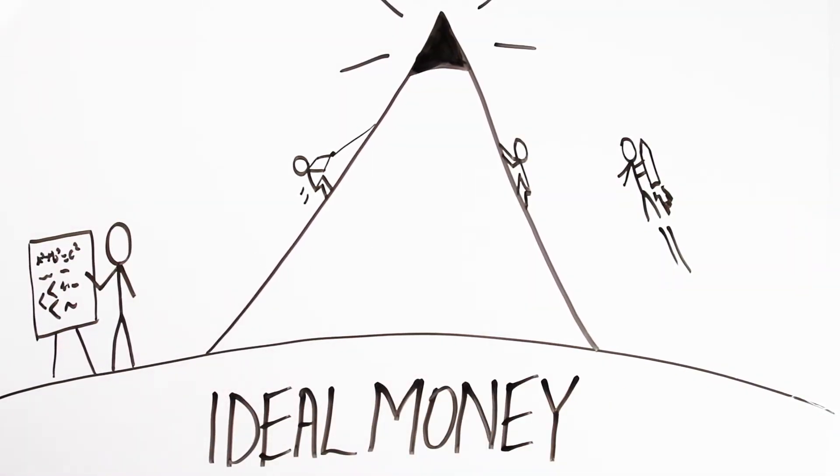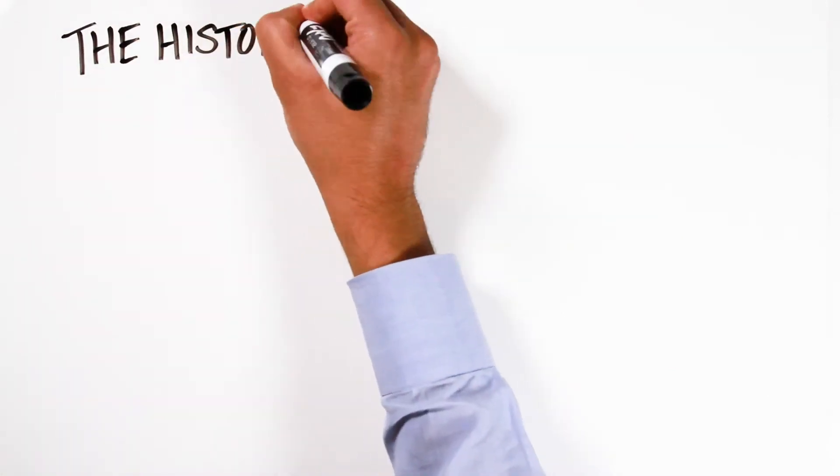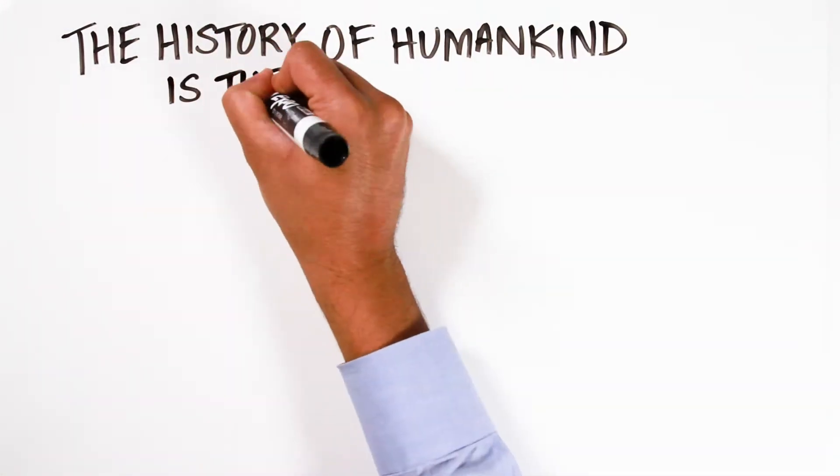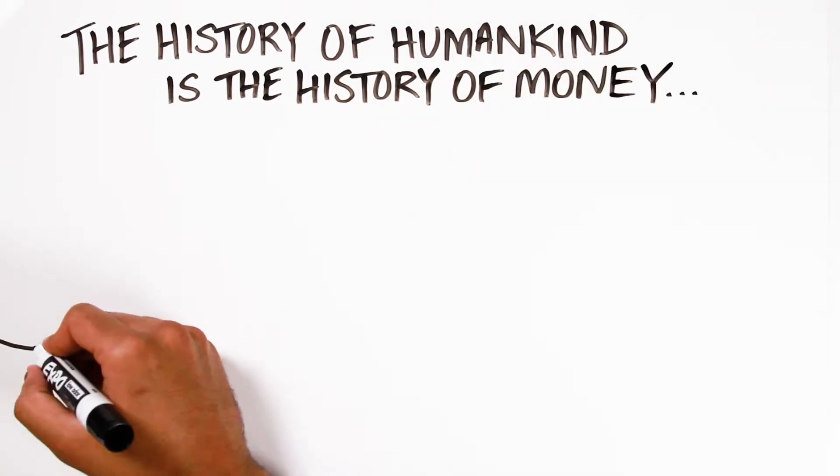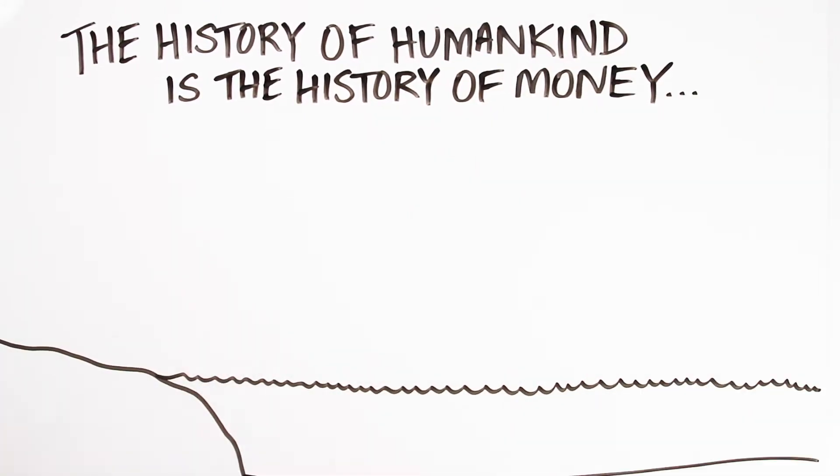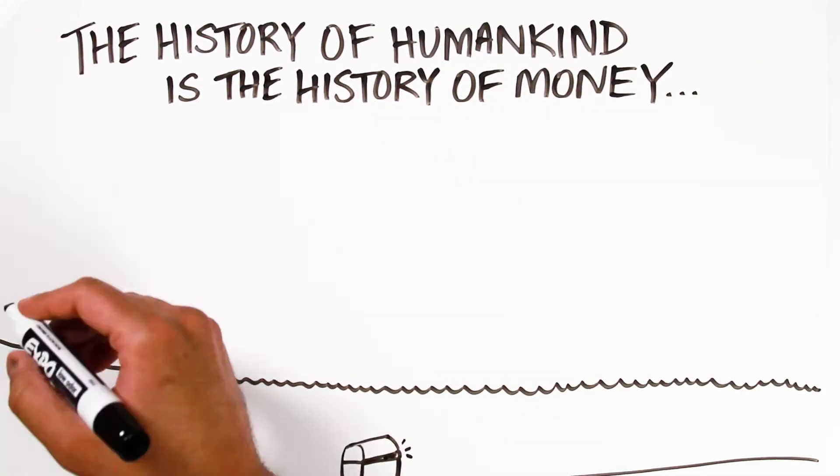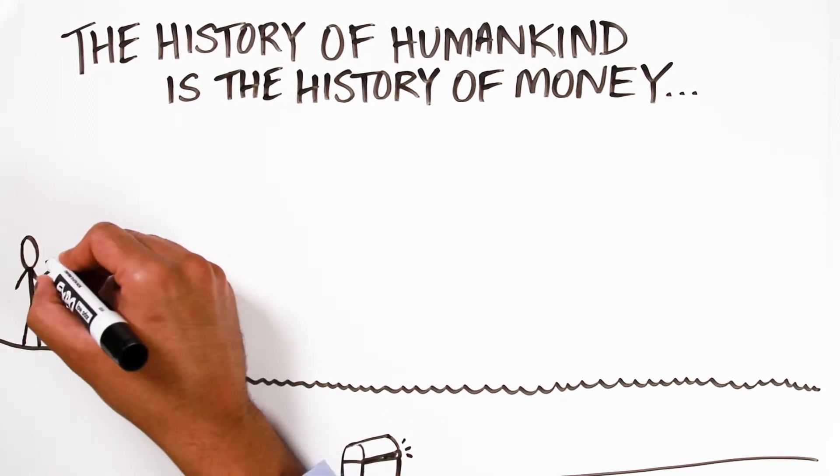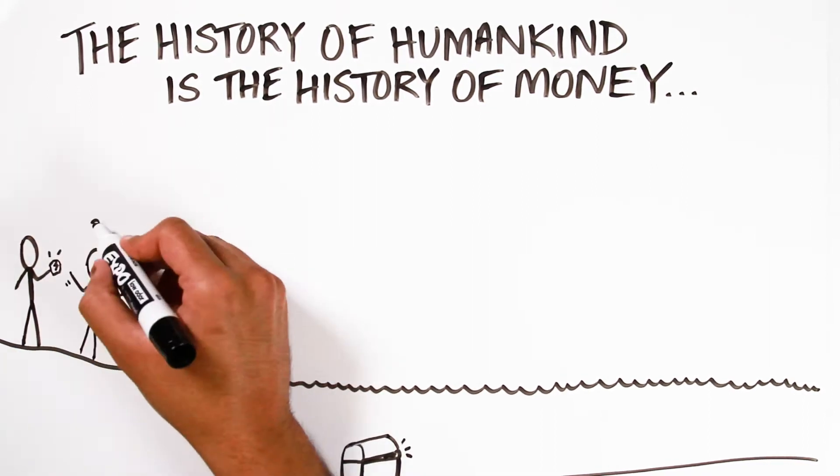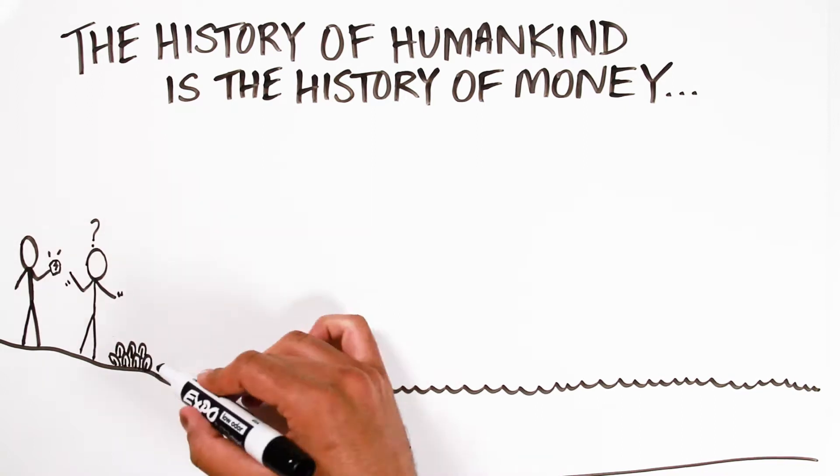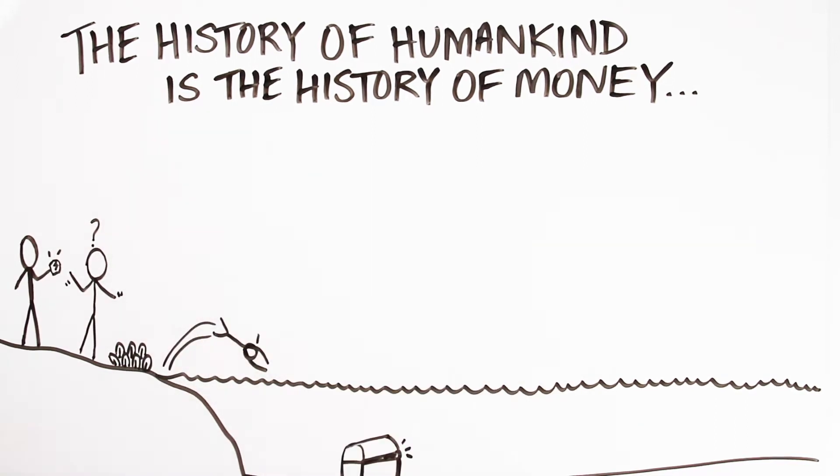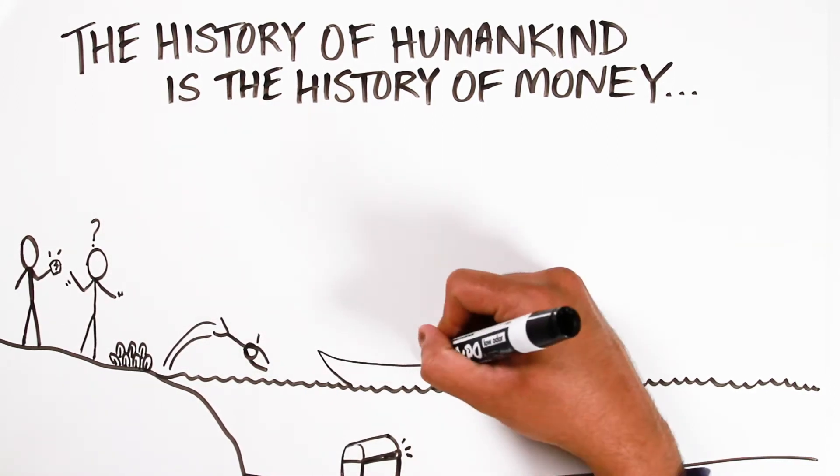Now, what do we mean by ideal money? Well, to think about ideal money, first stop is to think about the history of money. And the history of money is really the history of humankind. That's because humans have always needed a way to store value, to exchange value, and to transact to buy goods and services. And money has always played that role.